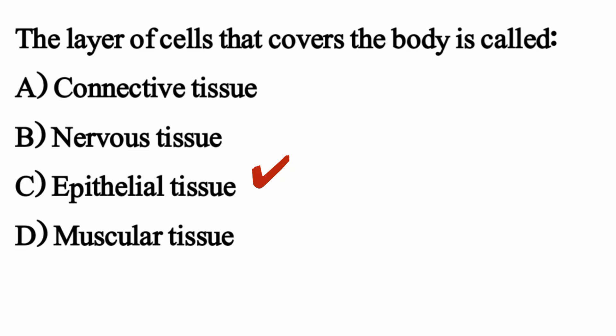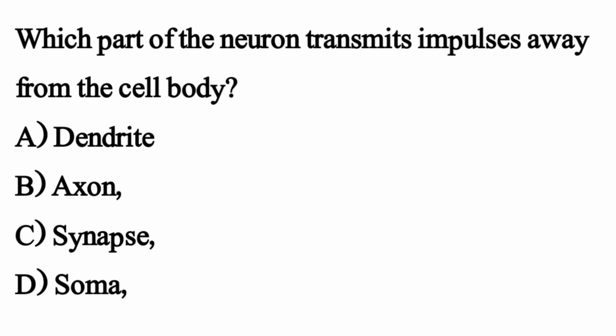Which part of the neuron transmits impulses away from the cell body? The right option is option B: axon.